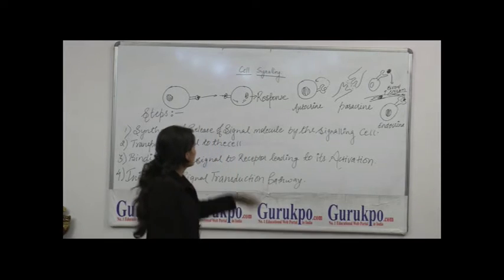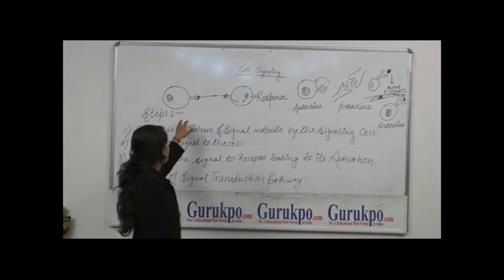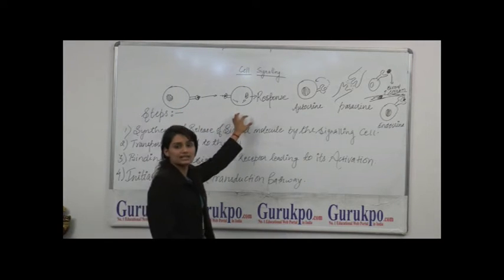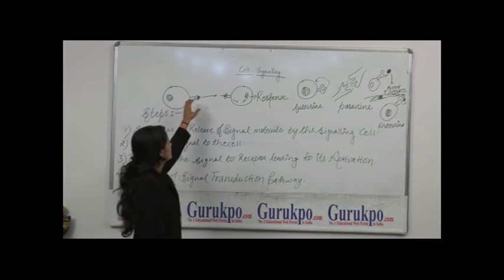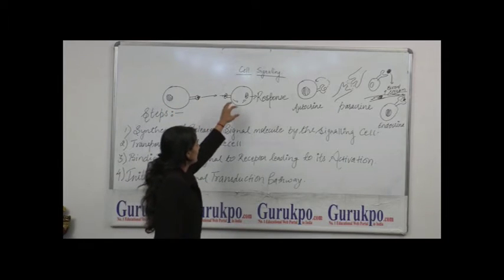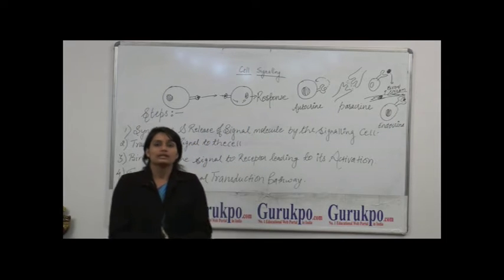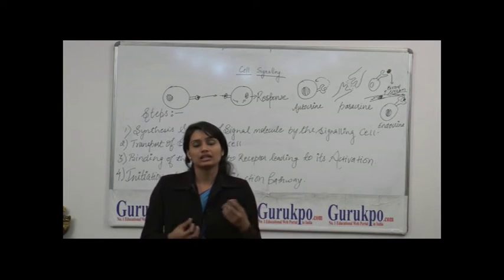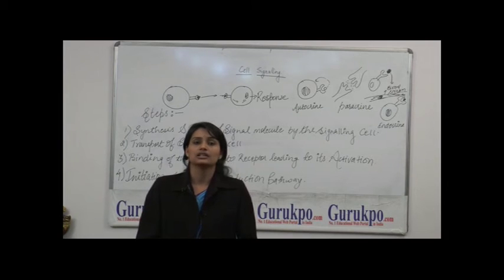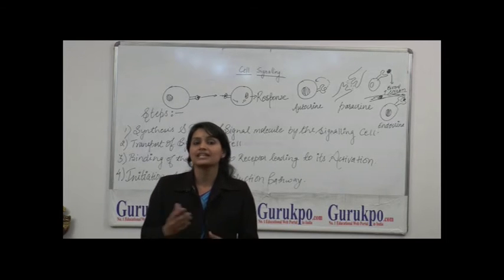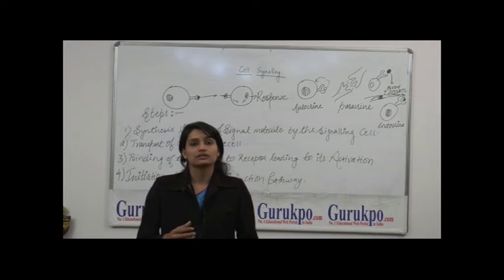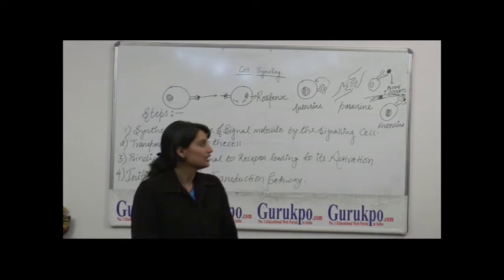You can see the diagrammatic presentation of cell signaling. This is a signaling cell and this is a target cell. The signaling cell produces a signal molecule which goes and binds to the target cell and produces response. This binding of this particular signaling molecule to the target cell leads to its activation and production of small intracellular molecules which are called secondary messengers. Examples such as cyclic AMP, cyclic GMP, inositol triphosphate, etc.